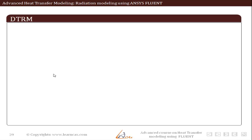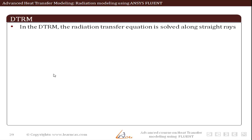That was about the P1 radiation model. Now let us move to the next radiation model, which is the DTRM — Discrete Transfer Radiation Model. The main assumption of the DTRM is that radiation leaving the surface element in a certain range of solid angles can be approximated by a single ray. So the radiation transfer equation is solved along a single straight line.